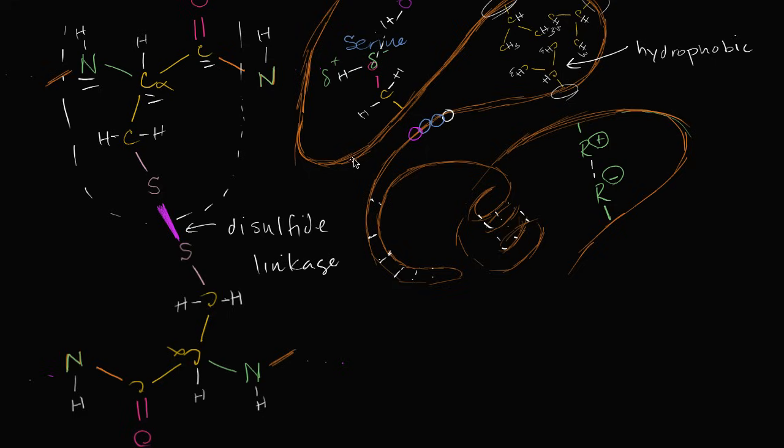And so you could imagine if this was a cysteine molecule, this part of the backbone, that their two side chains can form this disulfide linkage. And so that would provide almost a clip to clip those two parts of this entire polypeptide together.